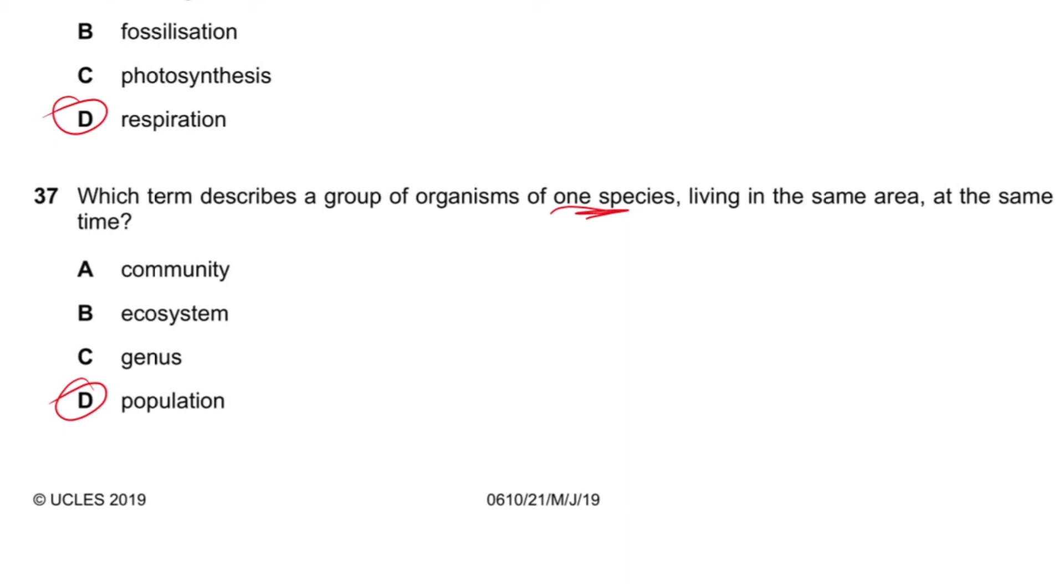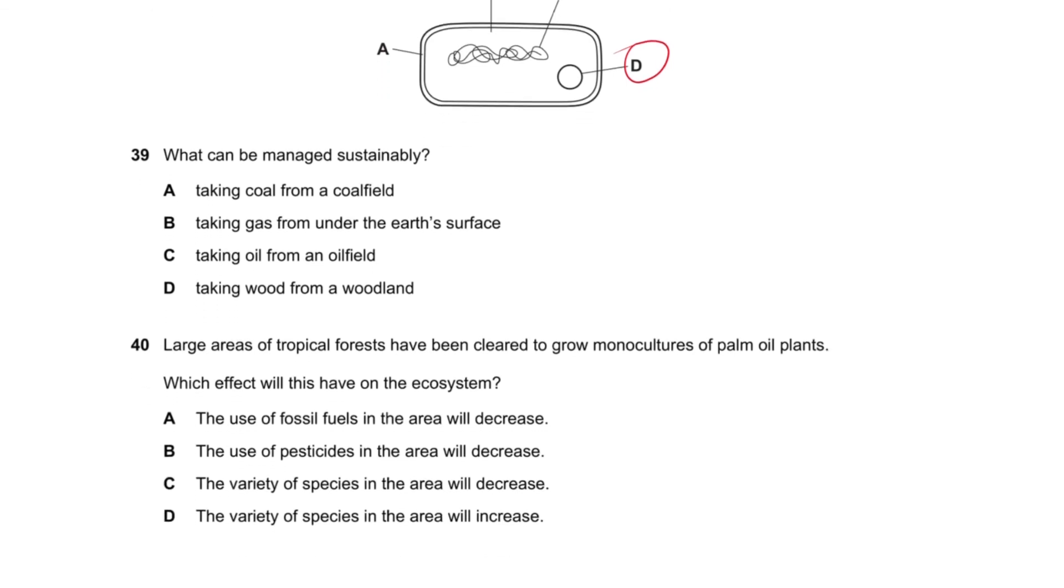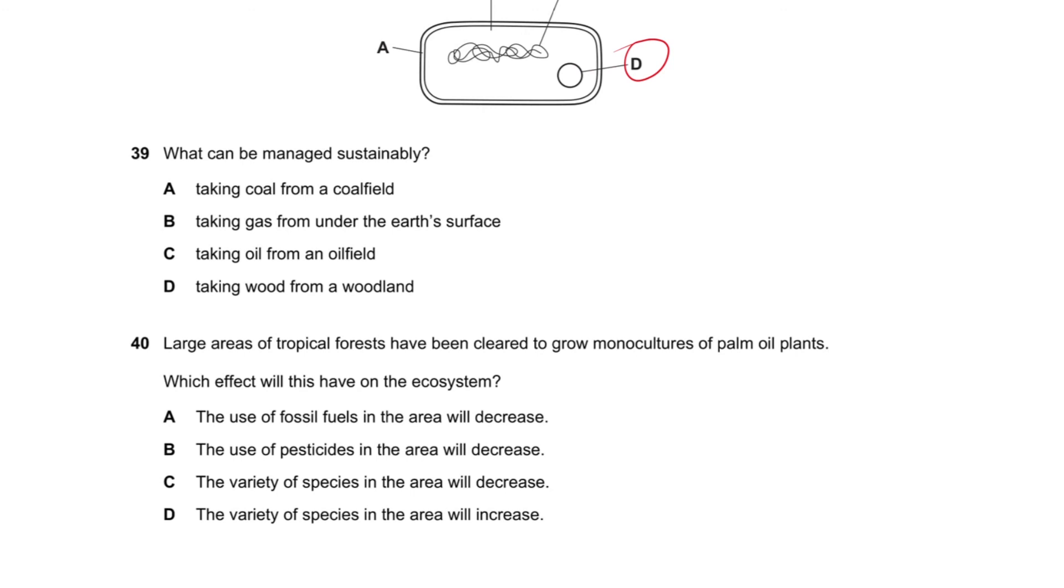Question number 38 says diagram shows the bacteria cell. Which part of structure is particularly useful in genetic engineering? It's the circular DNA because they have the genes that allow for it to be transferred to other bacteria or even other species of bacteria. Question number 39 says what can be managed sustainably? Taking coal from a coalfield? No. Taking gas from under the earth's surface? No. Taking oil from an oilfield? No. Taking wood from a woodland? Yes, because you can just plant trees again. Taking all of these others take years for them to form again, so it's not very sustainable.